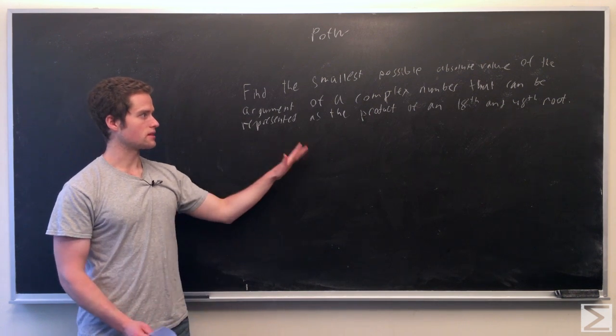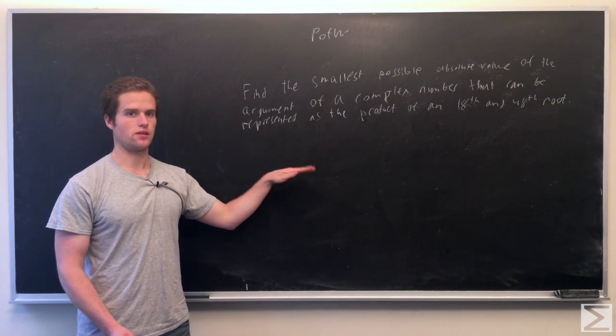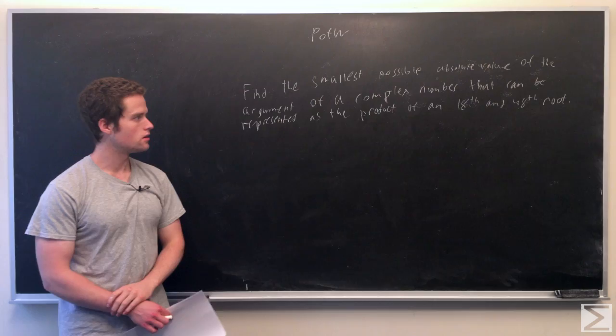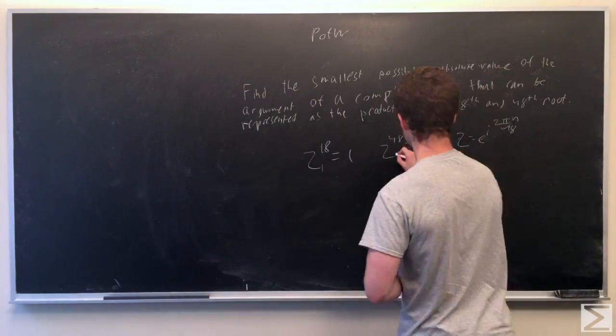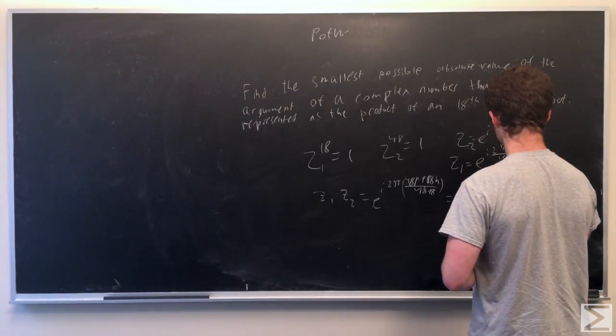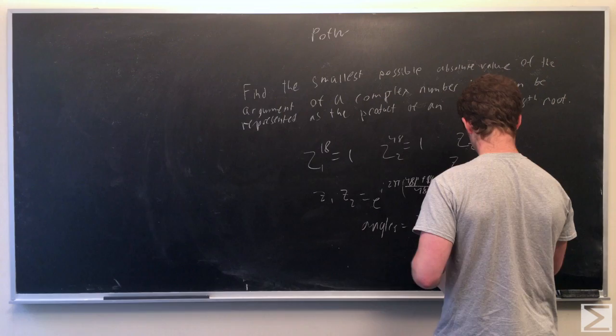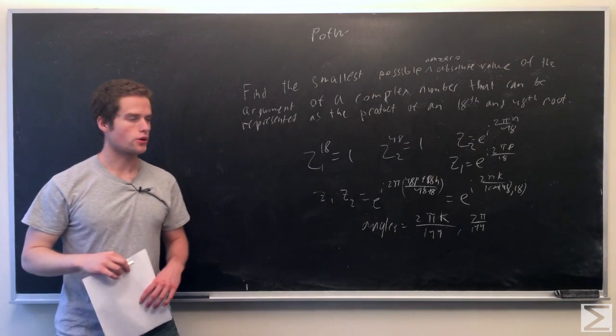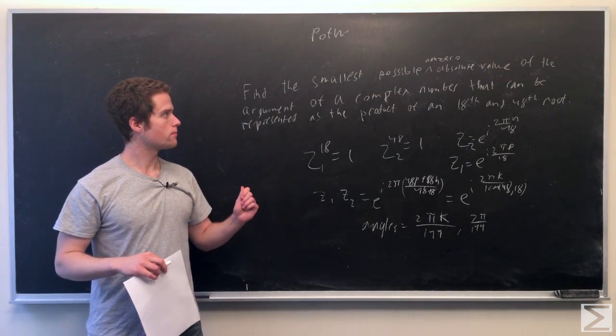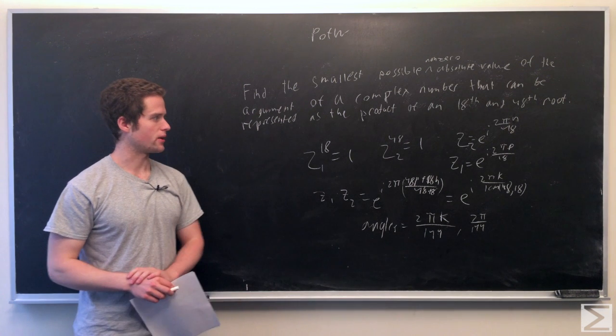So we want to basically find the complex number with a smallest angle. One quick addendum, we want the angle to be non-zero as well.